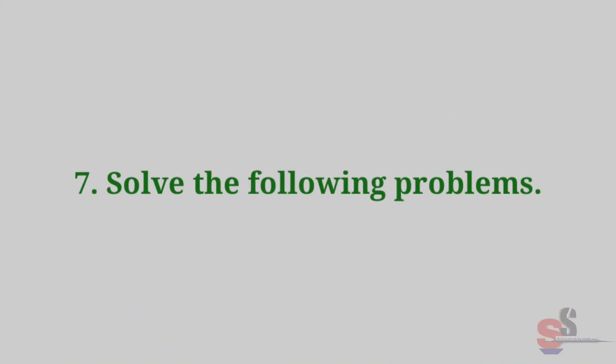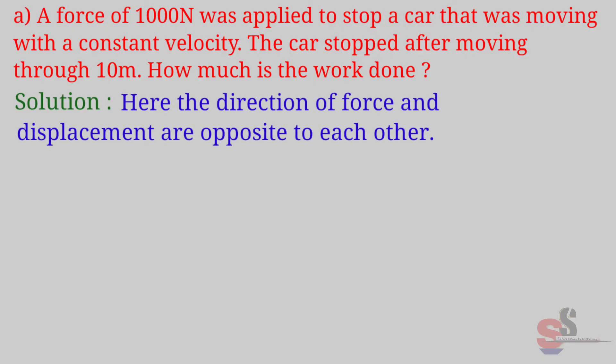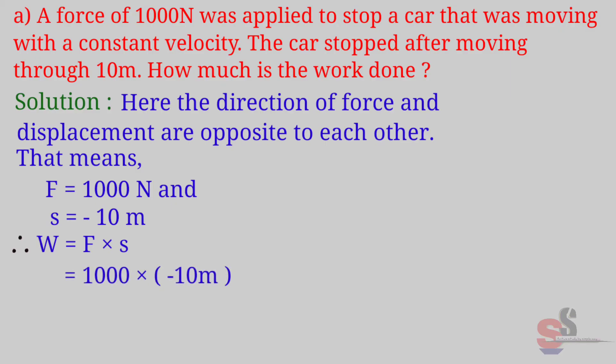Question 7: Solve the following problems. A. A force of 1000 N was applied to stop a car that was moving with a constant velocity. The car stopped after moving through 10 meters. How much is the work done? Solution: First of all, note one thing that in this problem the direction of force and displacement are opposite to each other. That means force is equal to 1000 N and S is equal to minus 10 meters. Now we know W is equal to F into S. That means work is equal to force into displacement, which is equal to 1000 into minus 10 meters, which is equal to minus 10,000 J. Answer: The work done W is equal to minus 10,000 J.